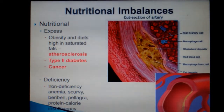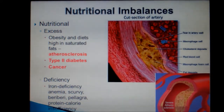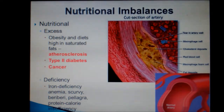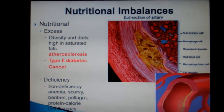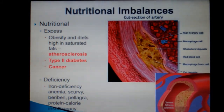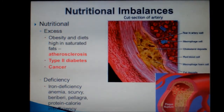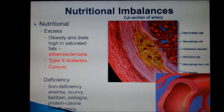Nutritional imbalances are pretty straightforward. We can have cell damage from either having too much of a good thing — or bad thing — or too little nutrients. For example, having an excess of calories or saturated fats on a regular basis can lead to many conditions, including obesity, atherosclerosis, type 2 diabetes mellitus, and cancer.